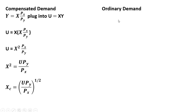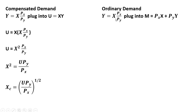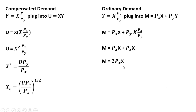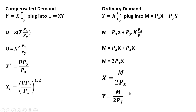Let's get the ordinary demand for good X. We've got this result: Y equals X times the price of good X divided by the price of good Y. Let's plug that into the budget constraint where we have Y. Solving for X, the price of Y terms cancel, and we have the ordinary demand for good X. To get the ordinary demand for good Y, we can take X and plug it back into the budget constraint and solve for Y, giving us the ordinary demand for good Y.